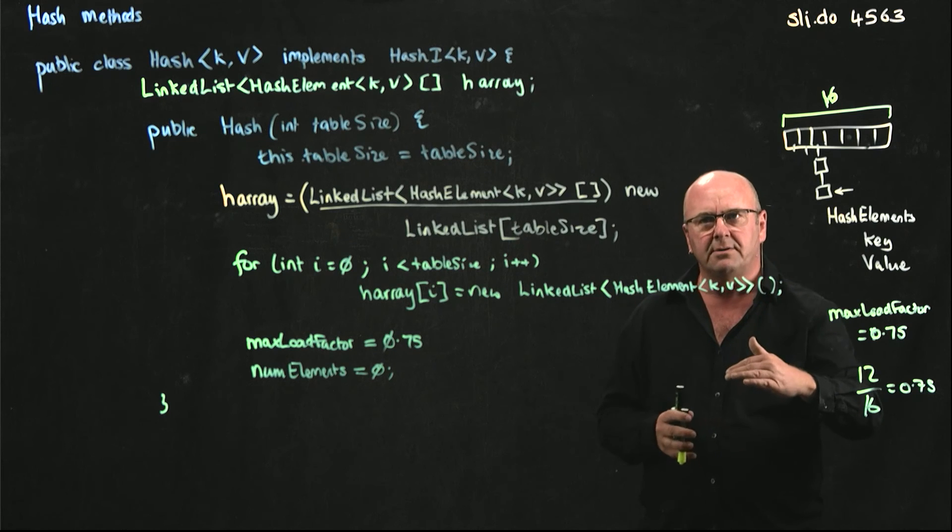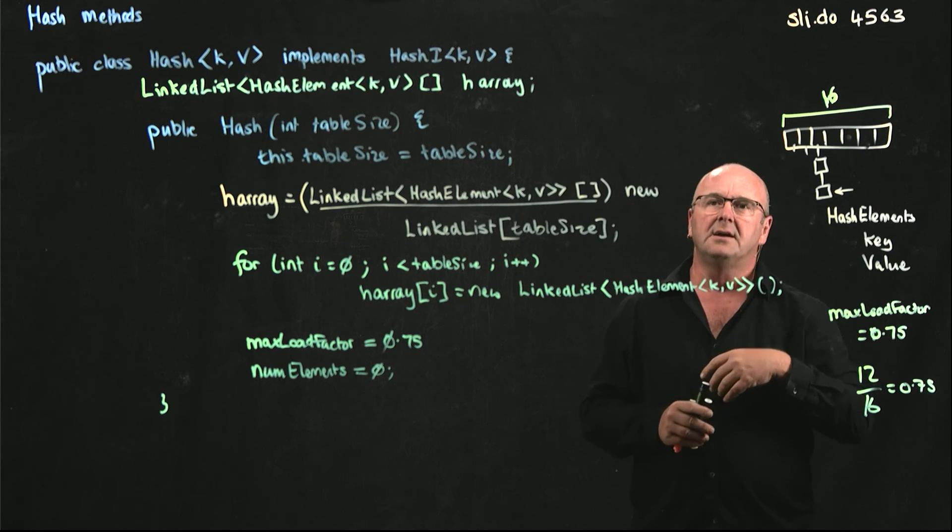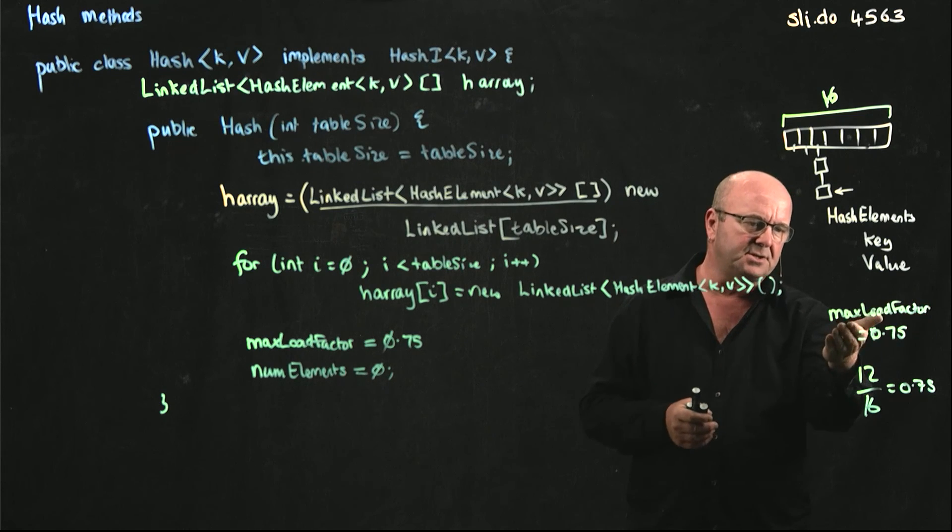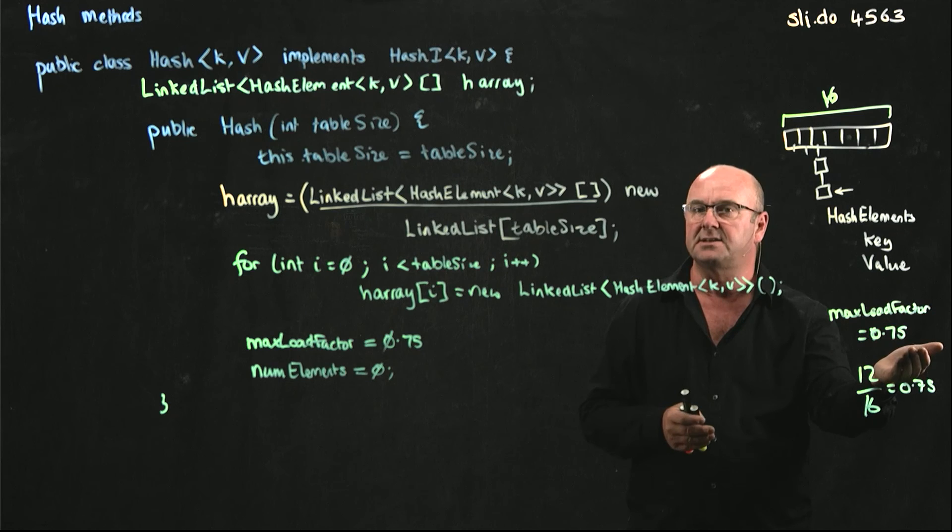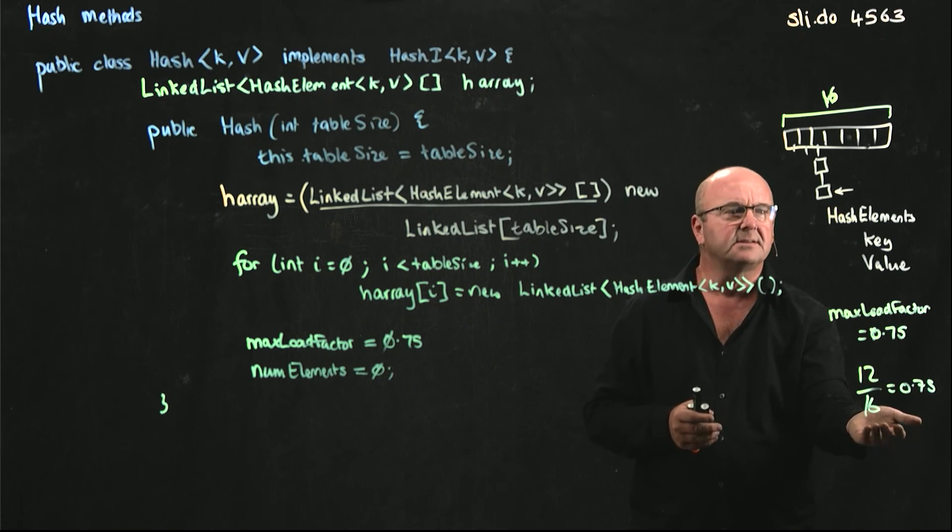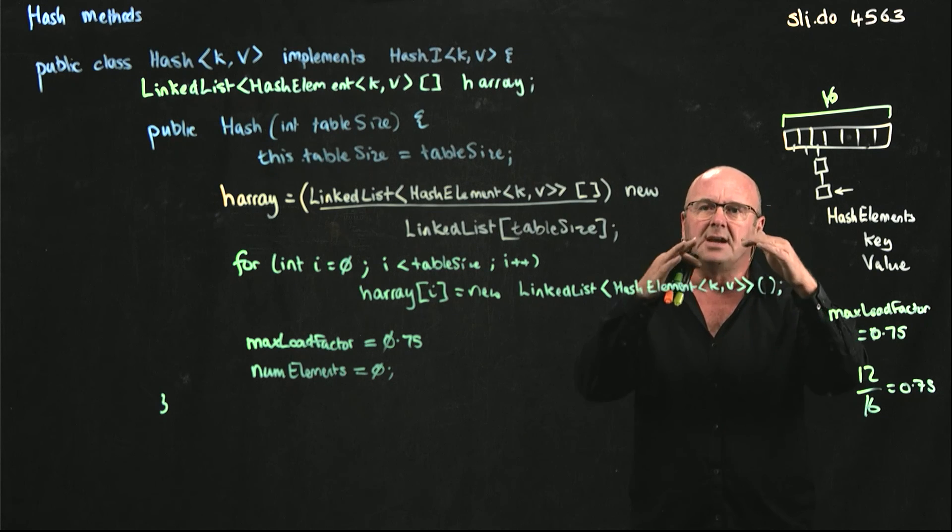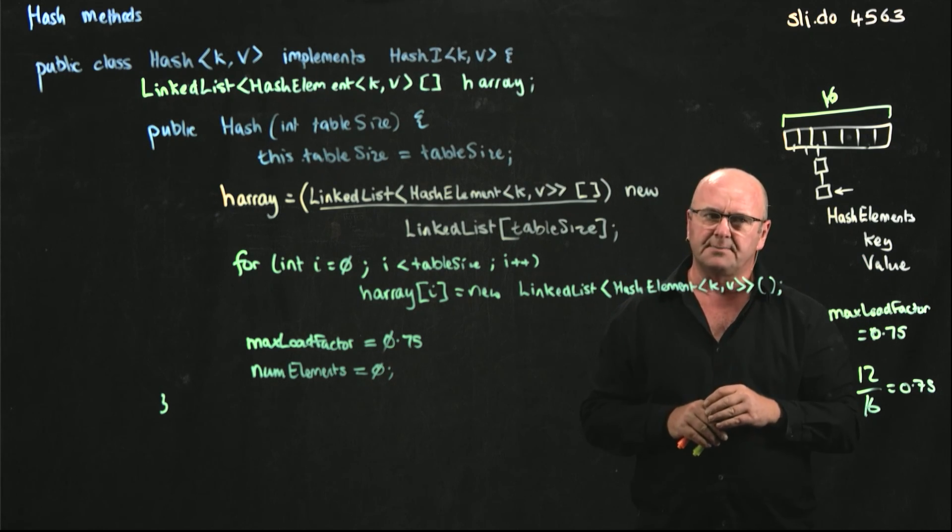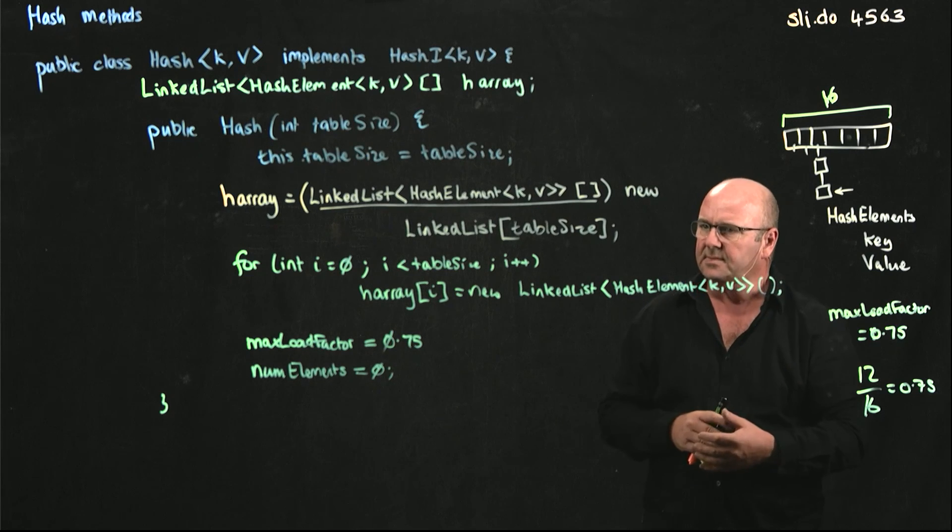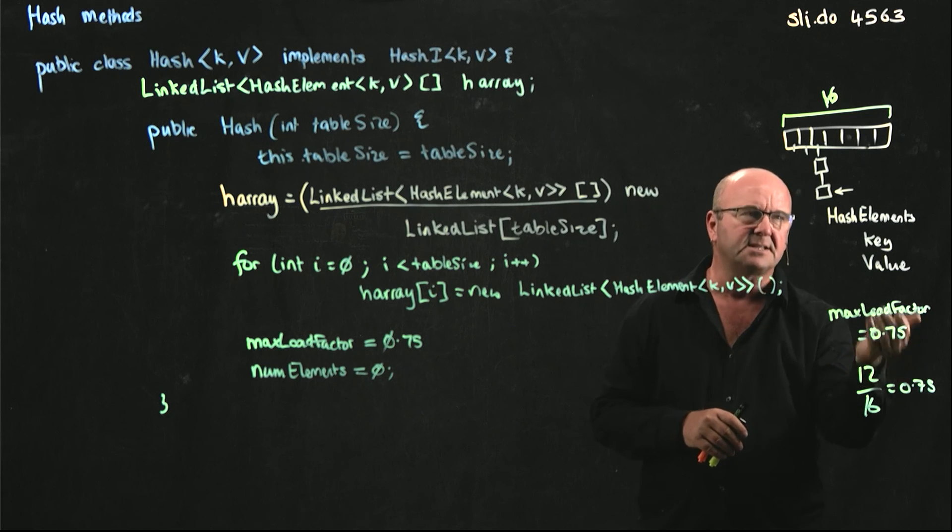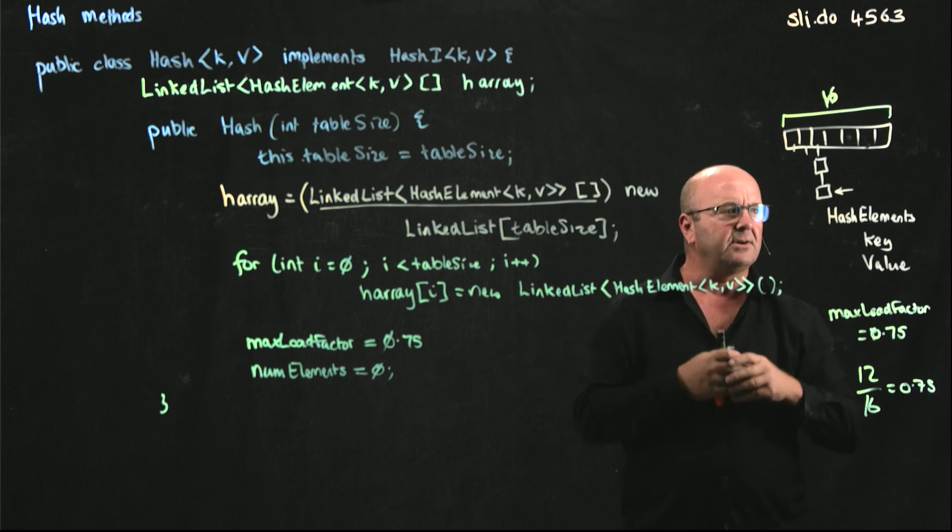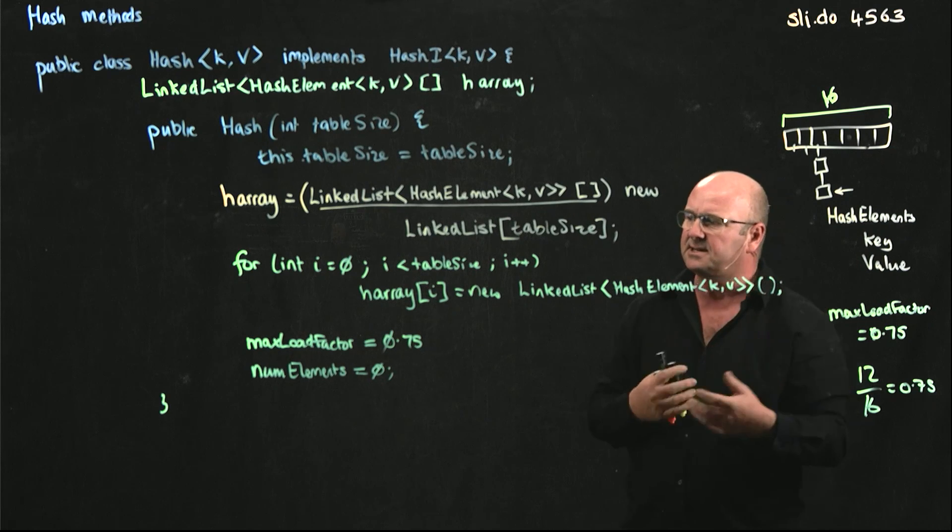If you have a low max load factor, then you're going to resize more frequently as you add more things. So if the Java's max load factor, if you drop that to 0.5, now after adding eight things, you're going to resize the table. So you keep your linked lists more evenly distributed at the cost of more frequent resizing. So it's a combination of the max load factor and the table size that basically sets the limit on how frequently you resize your table.